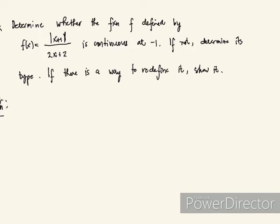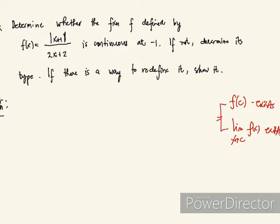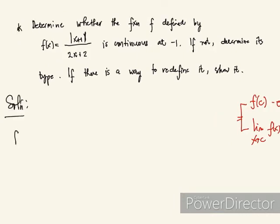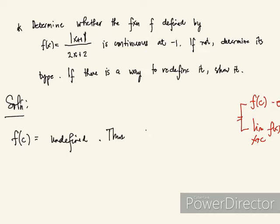How do we prove continuity of a function at a point? First, we check f(c). We need f(c) to exist. Then the limit of f(x) as x approaches c must exist. And then they should be equal. At f(c) — that is, f(−1) — this is undefined already. So f is not continuous at negative 1.